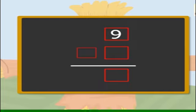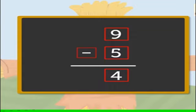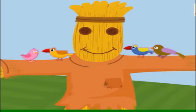Nine birds minus five birds is equal to four birds. Hence, there are four birds left on the scarecrow.